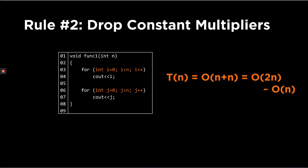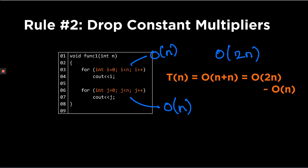The second rule we are going to discuss is the drop constant multipliers rule. Let's say I have the same code but now both loops are running from 0 to n minus 1, so each is running O(n) times. In such a case the total time complexity would be O(2n) — O(n) plus O(n) is O(2n) — and this can be further simplified to O(n). We basically drop this constant.